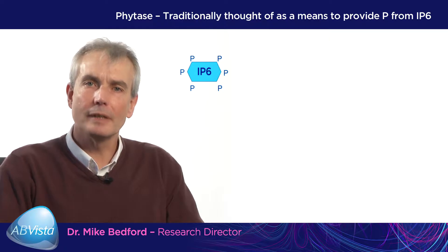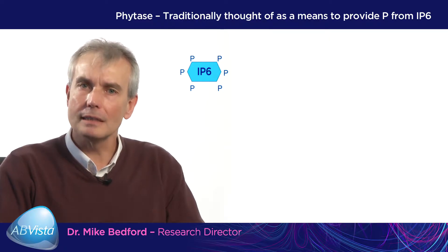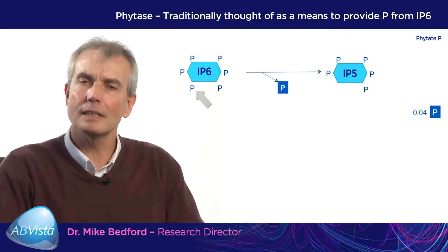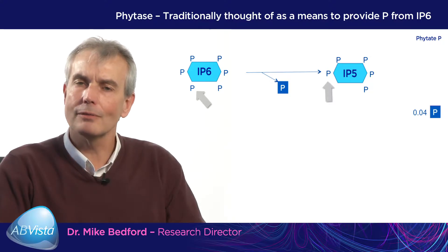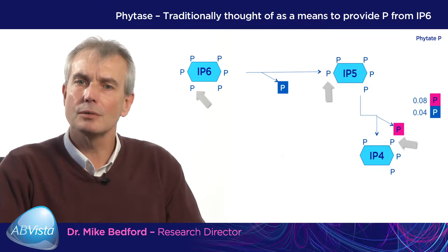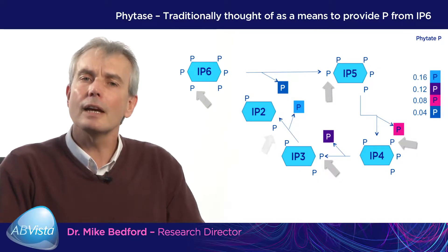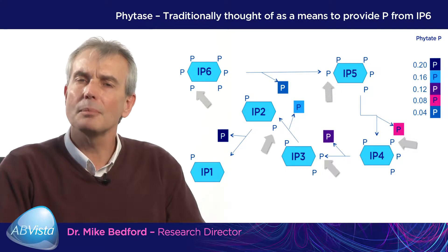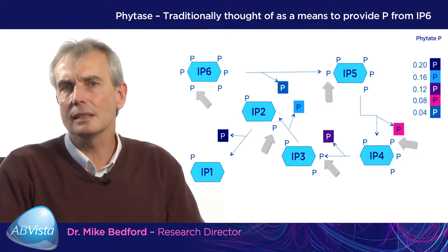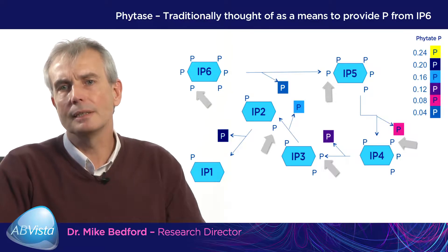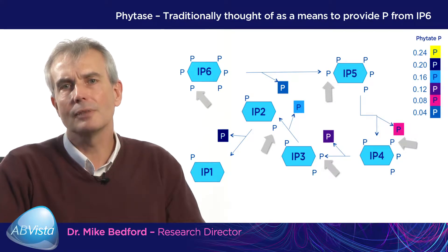Phytases are traditionally thought of as a means to provide phosphorus from IP6. All phytases are called phytases because they attack IP6 and make from it IP5, which is a new substrate which phytases continue to attack. IP5 is then made into IP4, another phosphate removed to generate IP3, and another phosphate removed to generate IP2. The final product of a phytase is IP1. No phytase breaks down IP1, but fortunately alkaline phosphatase in the gut is a very rapid enzyme and will digest IP1, producing inositol and the final phosphate very rapidly. So the six phosphates have been removed — five by phytase and one by alkaline phosphatase. That is how people have traditionally thought of using phytases.